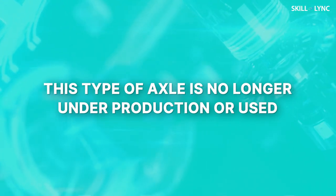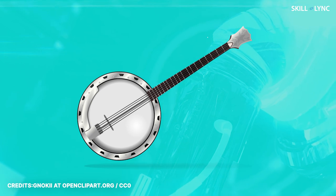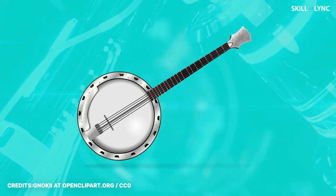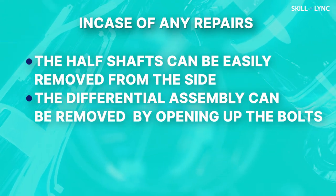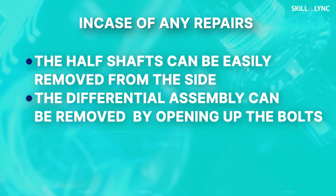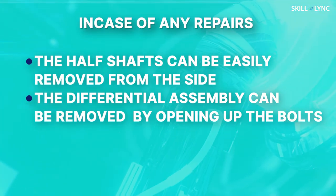This type of axle is no longer under production or used. The next type is the banjo type axle casing. Since it's shaped like a banjo, it's called the banjo type axle casing. In this type, the differential unit is carried in a separate carrier. While assembling, the carrier is bolted to the axle casing. The half shafts slide into the assembly through the opening in the axle casing. In case of any repairs, the half shafts can be easily removed from the side and the differential assembly can be removed by opening up the bolts.